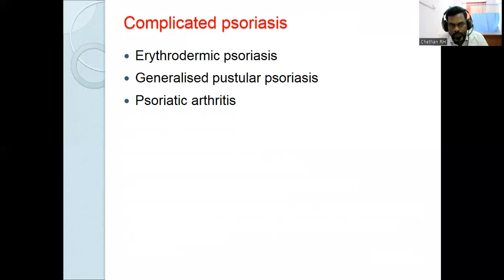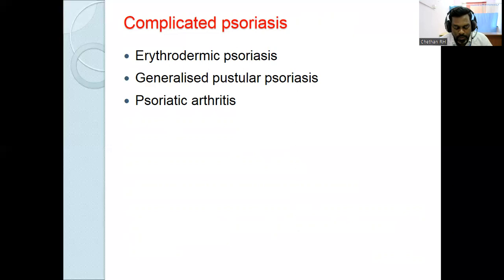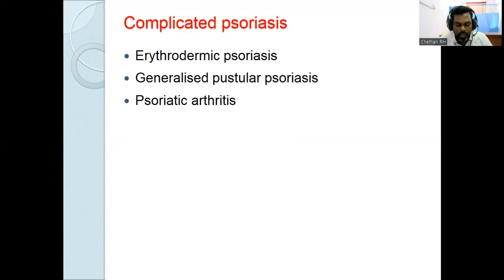Types of pustular psoriasis: broadly divided into generalized and localized. Generalized types include acute generalized pustular psoriasis of Von Zumbusch type, subacute annular and circinate pustular psoriasis, acute generalized pustular psoriasis of pregnancy (impetigo herpetiformis), and infantile and juvenile generalized pustular psoriasis. Localized types include palmoplantar pustulosis and acrodermatitis continua of Hallopeau.